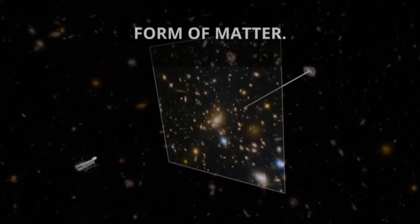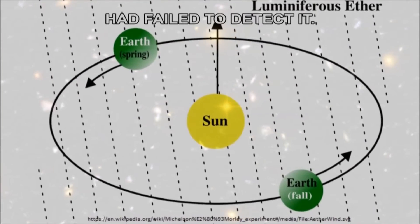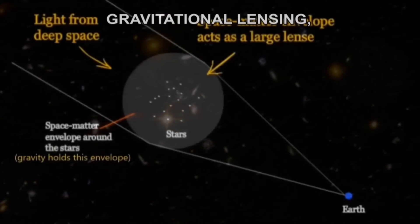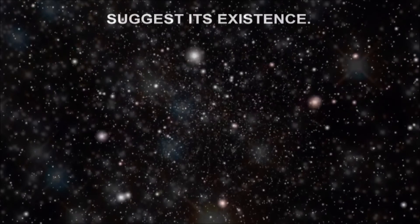Space is filled with a form of matter. Michelson-Morley experiment had failed to detect it. However, starlight bending, gravitational lensing, pair production in space, etc. suggest its existence.